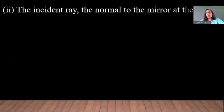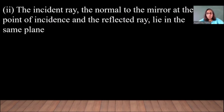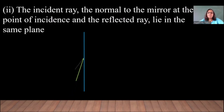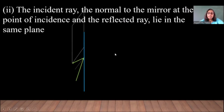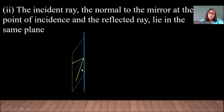Now, the second law: the incident ray, the normal to the mirror at the point of incidence, and the reflected ray lie in the same plane. What does it mean? Suppose there is a surface and the ray is incident at the surface at a point, and this is the normal to this surface, then it gets reflected. I can pass a plane through all three: the incident ray, the reflected ray, and the normal. That is what it means — all three lie in the same plane. Let us see an experiment which demonstrates this.